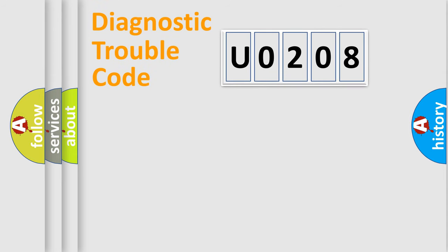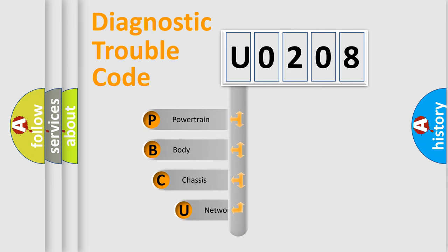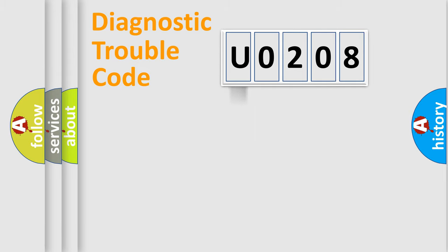Let's do this. First, let's look at the history of diagnostic fault code composition according to the OBD2 protocol, which is unified for all automakers since 2000. We divide the electric system of an automobile into four basic units: Powertrain, Body, Chassis, and Network.